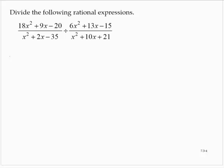Divide the following rational expressions: 18x² + 9x - 20 over x² + 2x - 35 divided by 6x² + 13x - 15 over x² + 10x + 21.